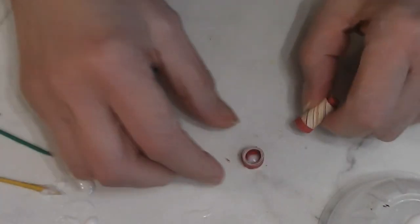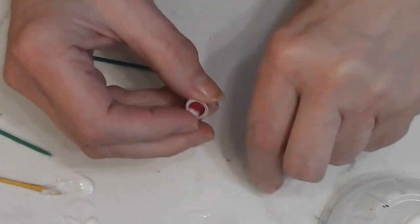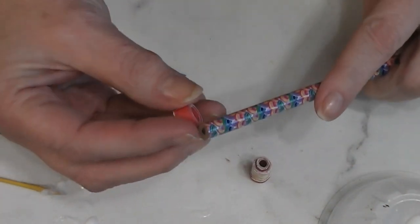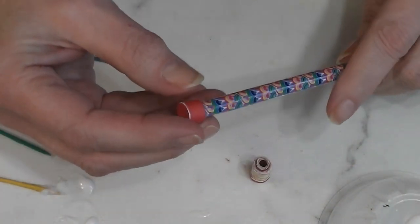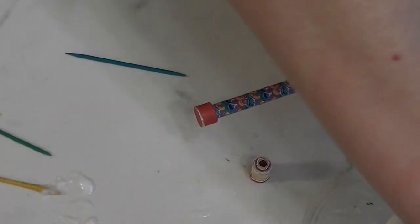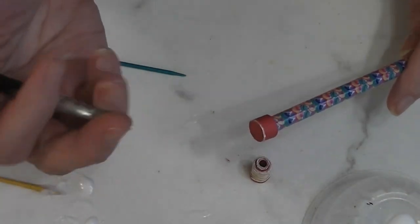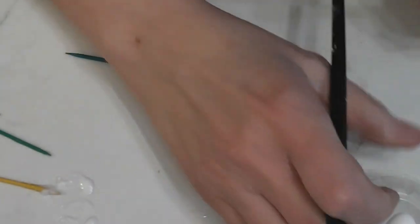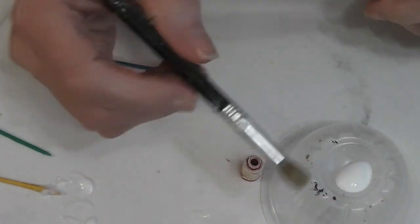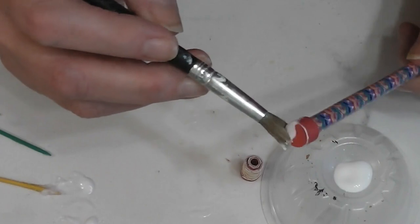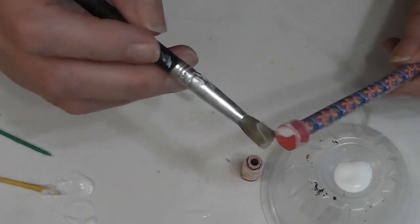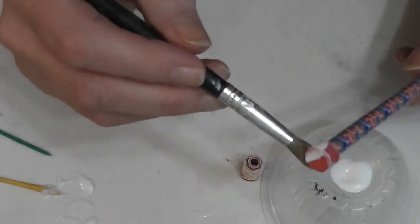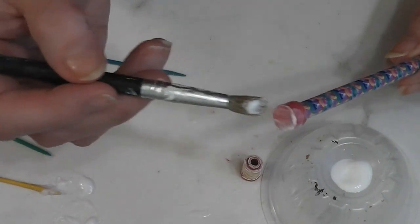Alright, our glue is fairly dry. This is still wet inside, so I'm not going to leave it on here very long. But for right now, I'm going to loosely put this onto the unsharpened end of my pencil. I've got a nice soft brush and I have some Satin Finish Mod Podge. And I'm going to coat this, give this a nice coat of Mod Podge. And then I want this to sit overnight.